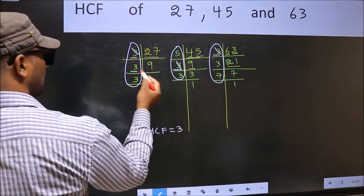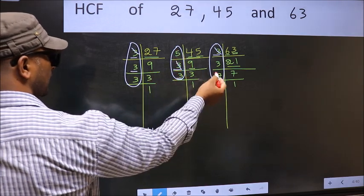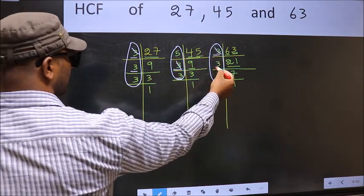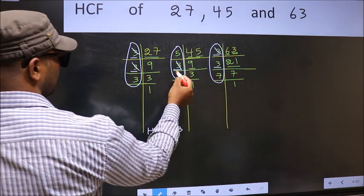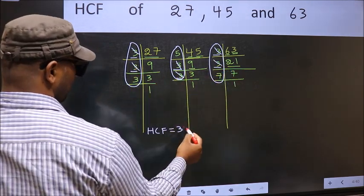Next number 3. Do we have 3 here? Yes. Go to the next place. Do we have 3 here? Yes. So cut 3 right here.